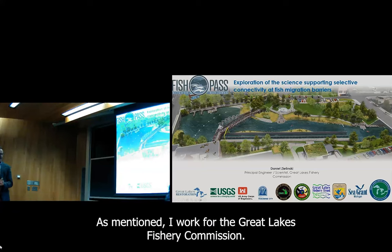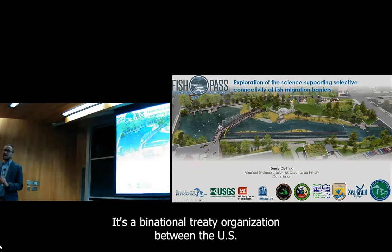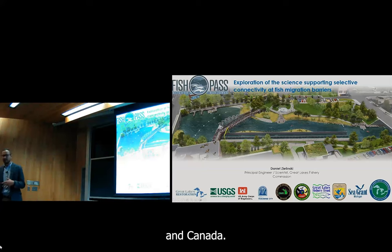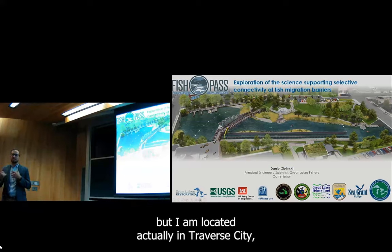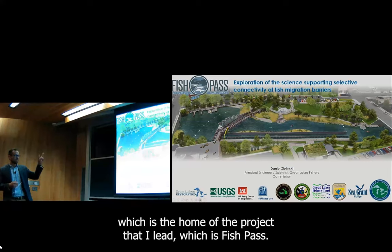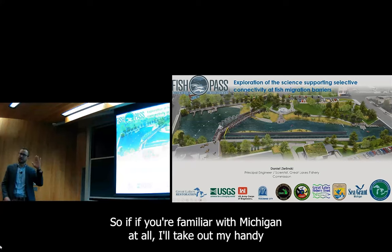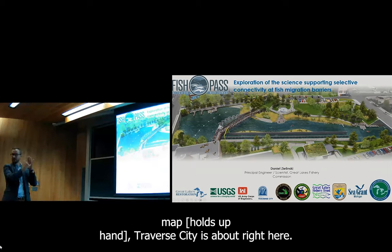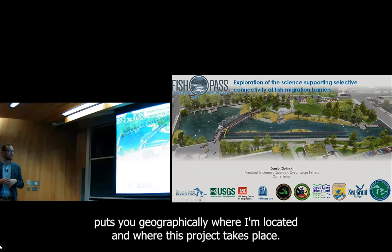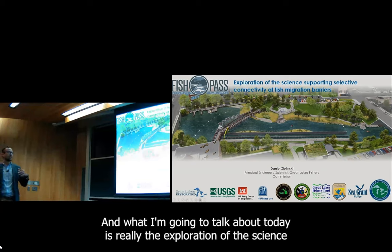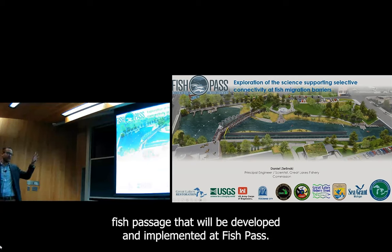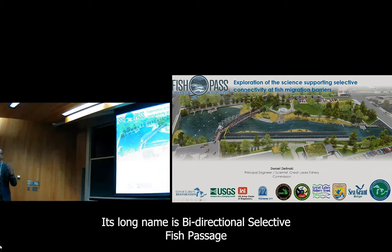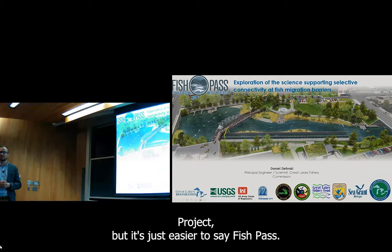I work for the Great Lakes Fishery Commission — it's a binational treaty organization between the U.S. and Canada. Our head office, called the Secretariat, is actually in Ann Arbor. I am located in Traverse City, which is home of my project that I lead, which is Fish Pass — or its full name, the bi-directional selective fish passage project. What I'm going to talk about today is really the exploration of the science supporting selective fish passage that will be developed and implemented at Fish Pass.